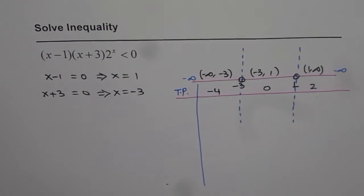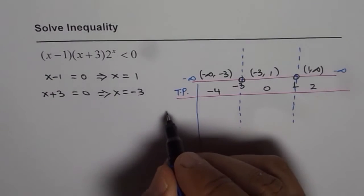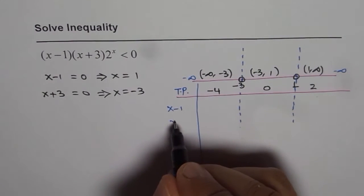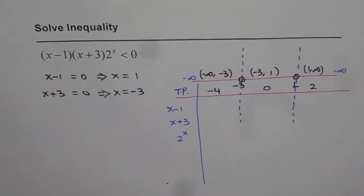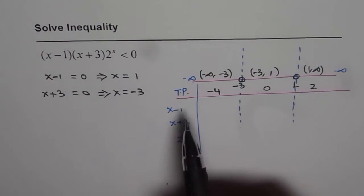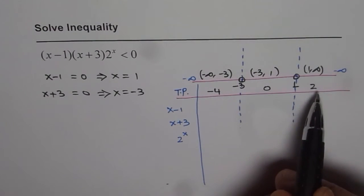In the expression we have 3 different factors. So we will consider each factor one at a time. The first factor is x minus 1, the second one is x plus 3, and the third one is 2 to the power of x. We are not really interested in their value but we want to know whether they are positive or negative in these intervals.